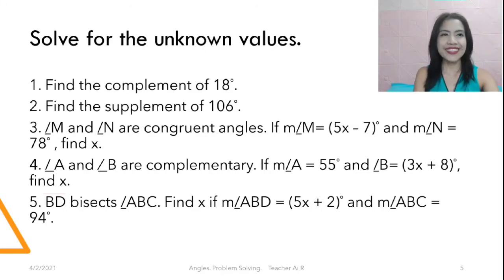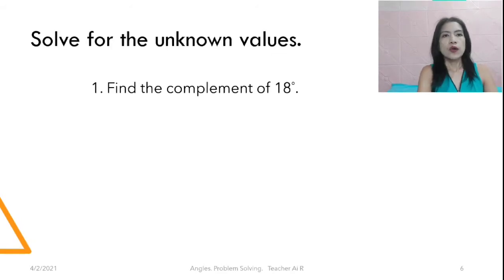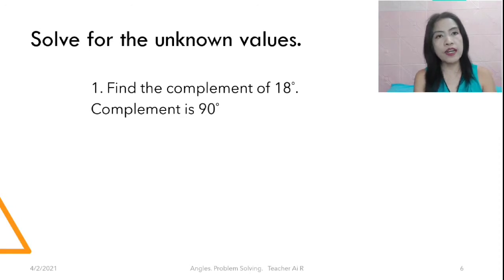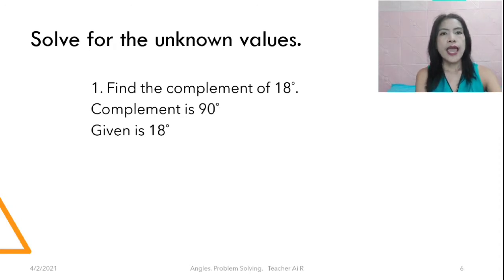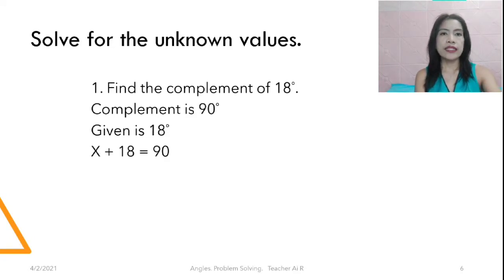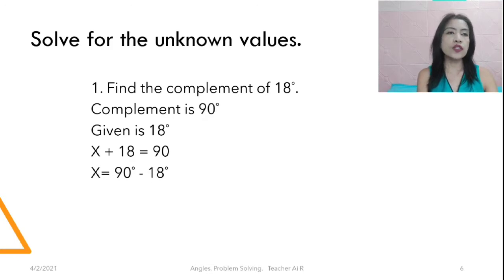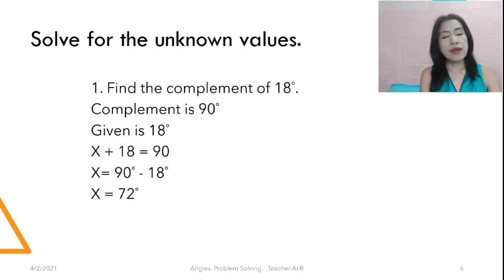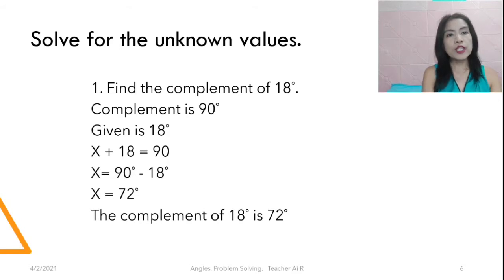So let's find the complement of 18 degrees. When you see a complementary angle, it's 90 degrees, and the given is 18 degrees. So we're going to have X plus 18 equals 90. Then X equals 90 degrees minus 18 degrees. So 90 minus 18 equals 72. Therefore X equals 72 degrees — the complement of 18 degrees is 72 degrees.